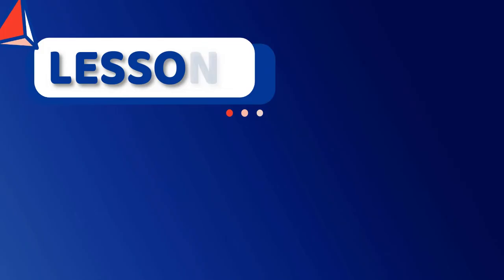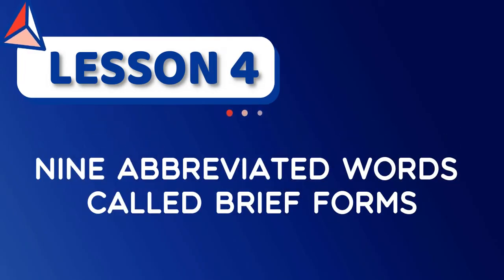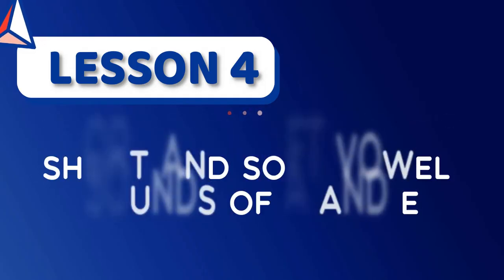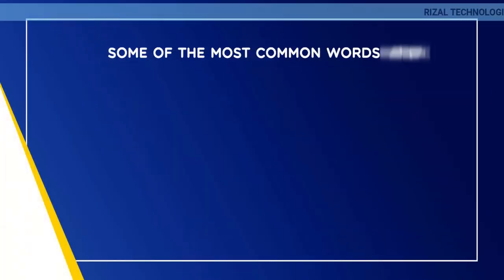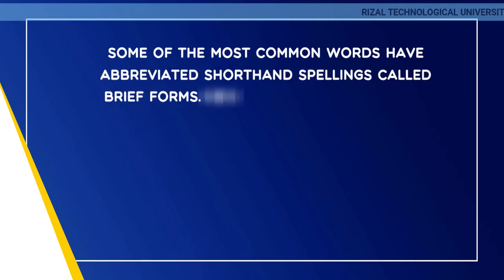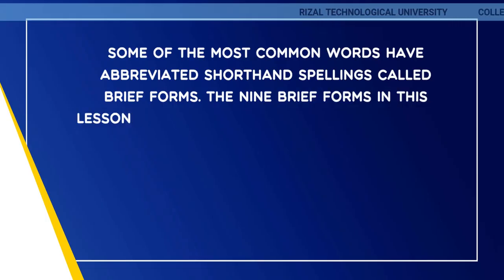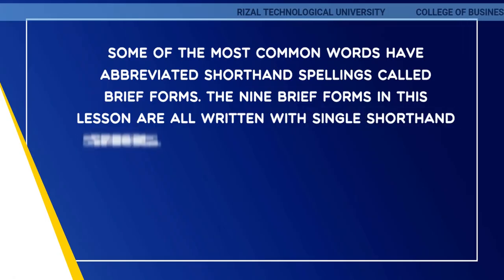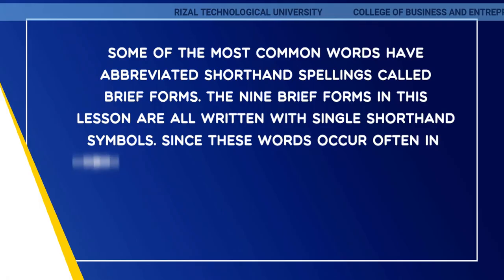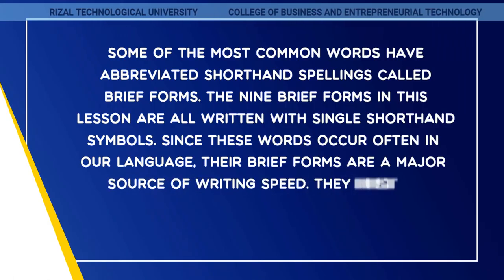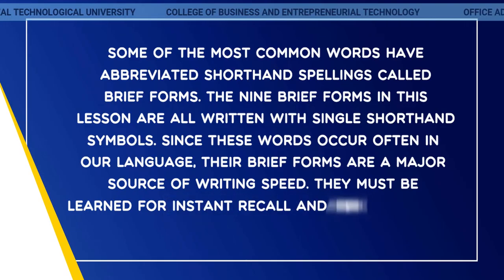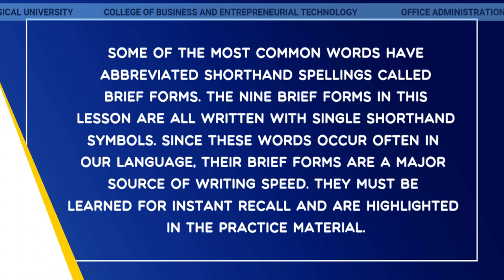Lesson number four covers nine abbreviated words called brief forms, and the short and soft vowel sounds of A and E. When taking class notes, some of the most common words have abbreviated shorthand spellings called brief forms. The nine brief forms in this lesson are all written with single shorthand symbols. Since these words occur often in language, their brief forms are a major source of writing speed. They must be learned for instant recall and are highlighted in the practice material.